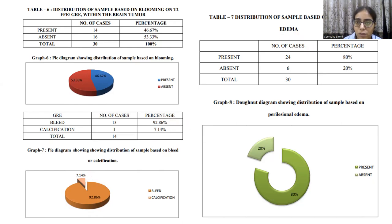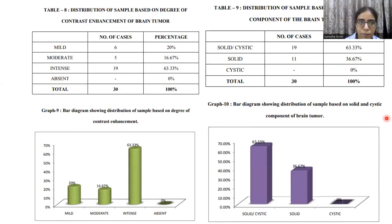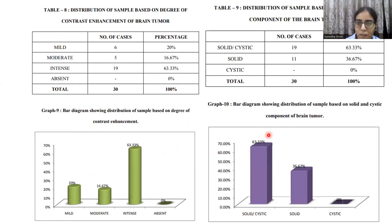Distribution based on edema: approximately 80% of lesions had perilesional edema, while 20% did not. Distribution based on contrast enhancement: 60% of lesions showed intense contrast enhancement, 16% showed moderate enhancement, and 20% showed mild enhancement. Distribution based on solid and cystic components: 60% of tumors were solid-cystic, while the remaining 36% were only solid.